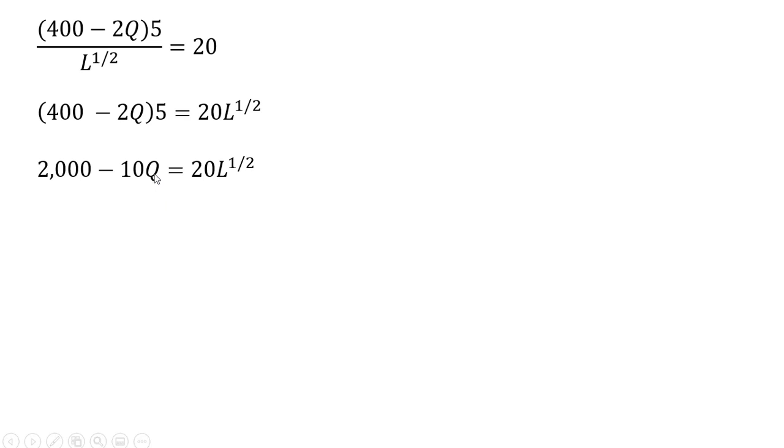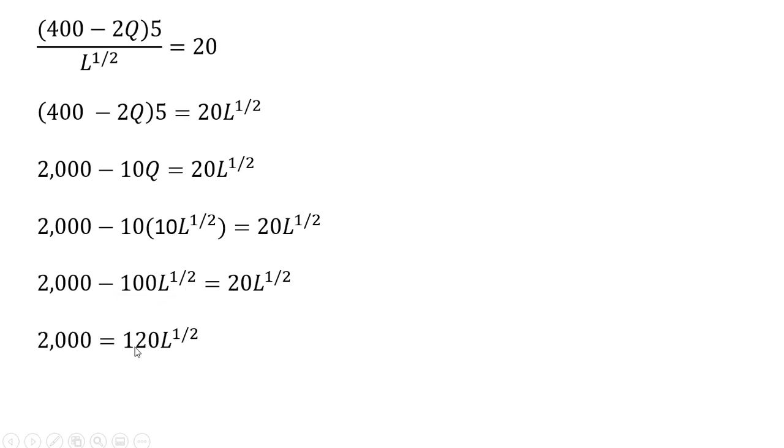And now what I want to do, I want to replace this Q with the production function. So I'm replacing this Q with the production function. So the hourly production function here is as follows. And now simplifying. Moving this minus 100 L to the 1 half power over to the right hand side. Dividing through by 120.